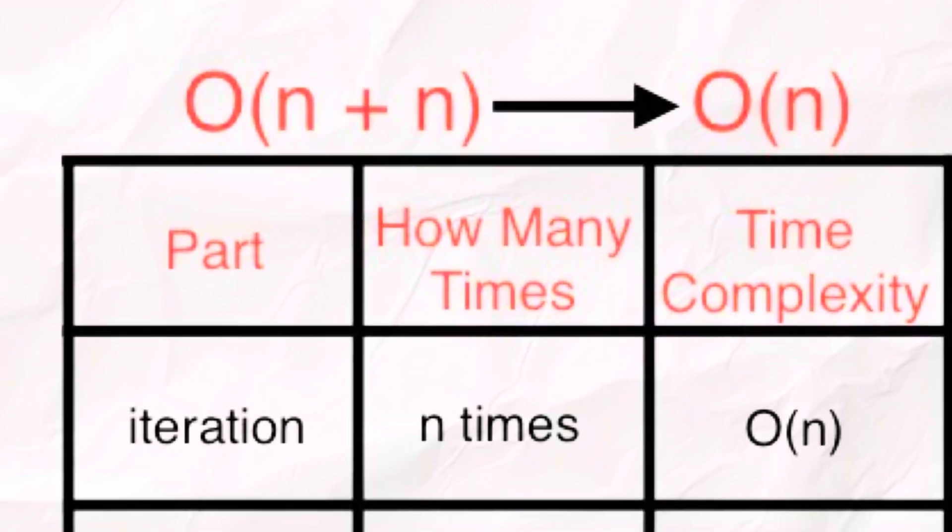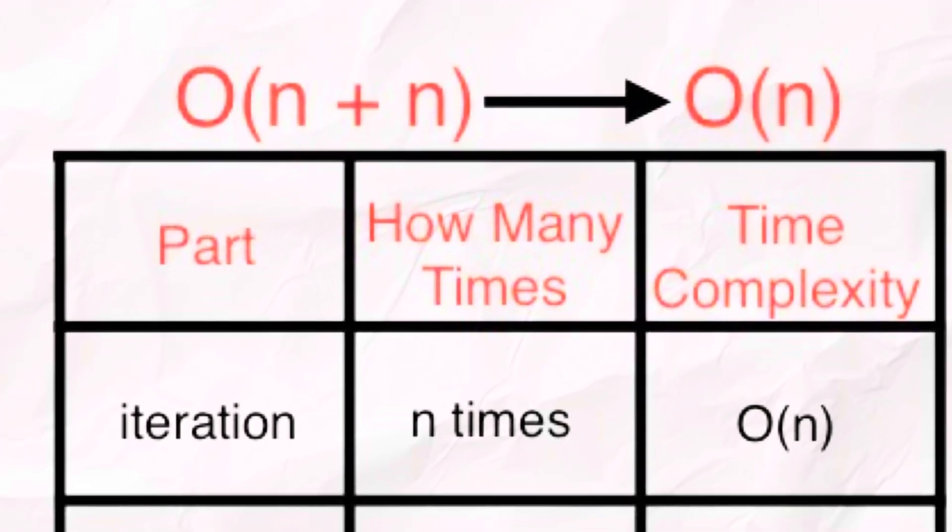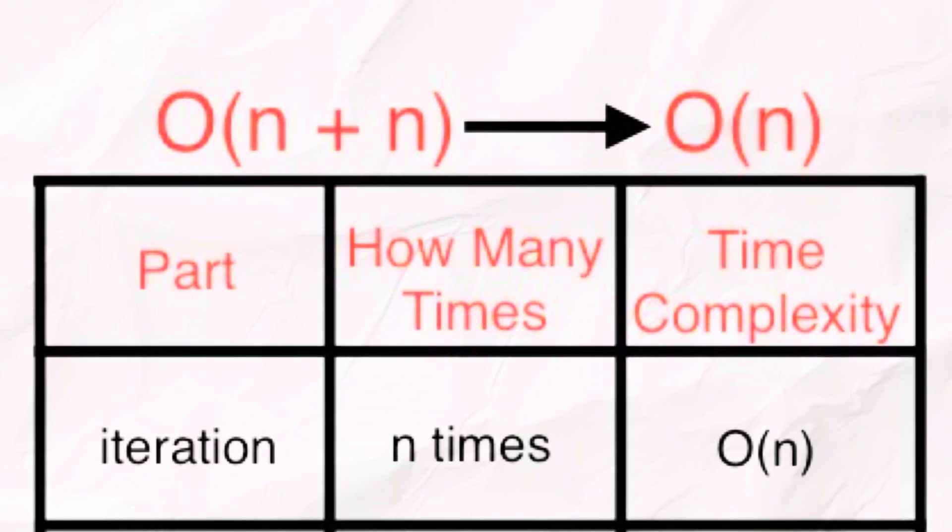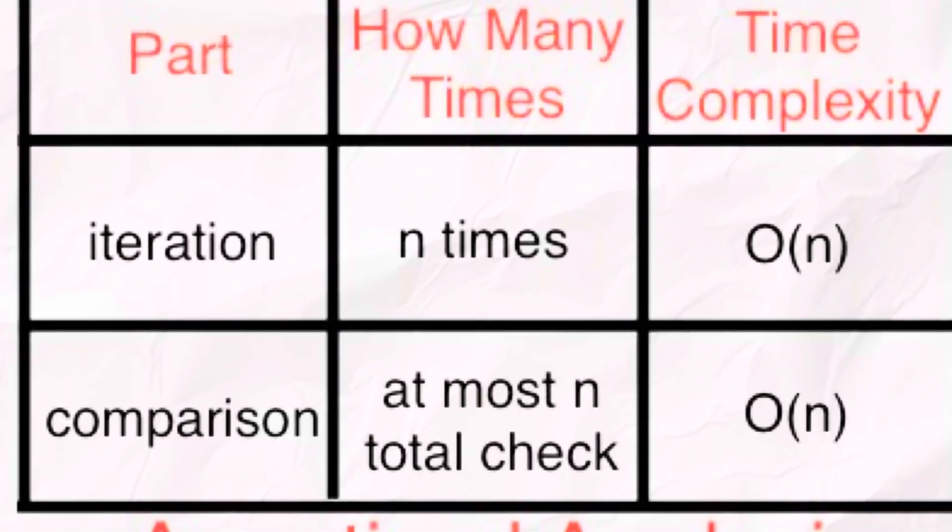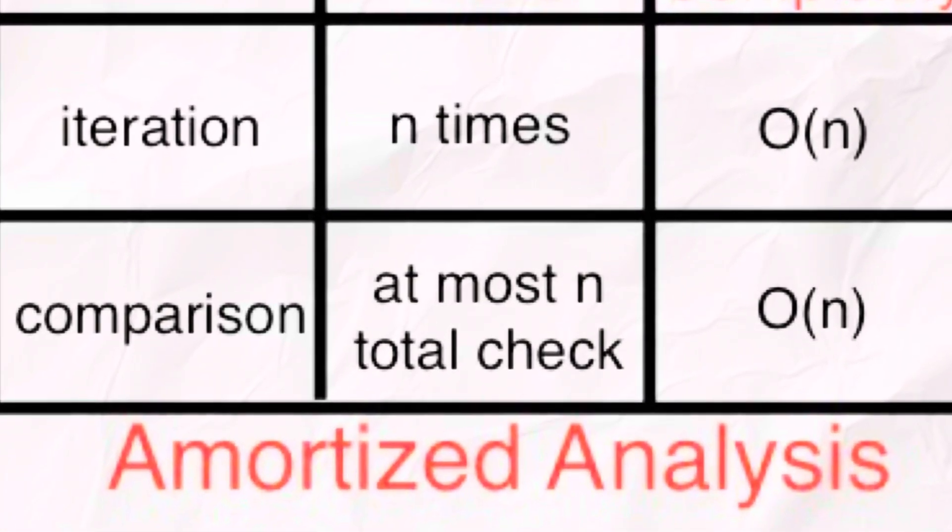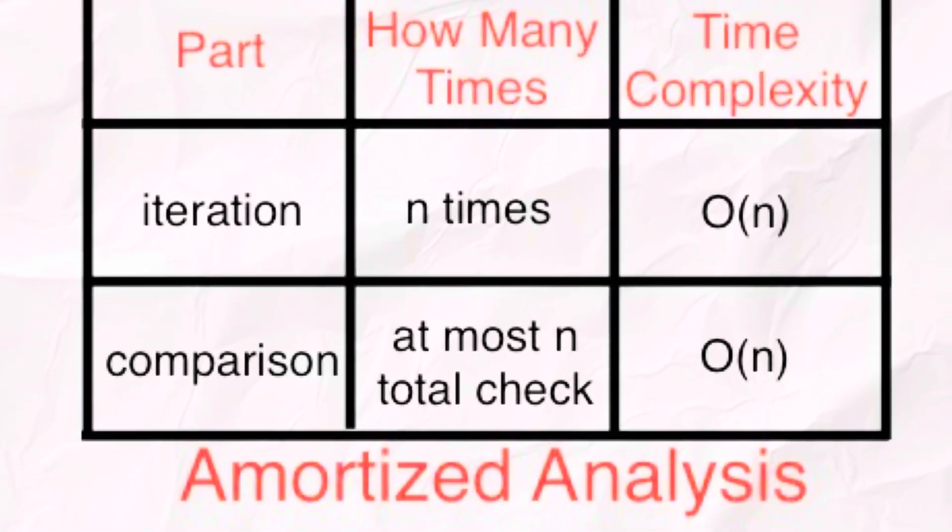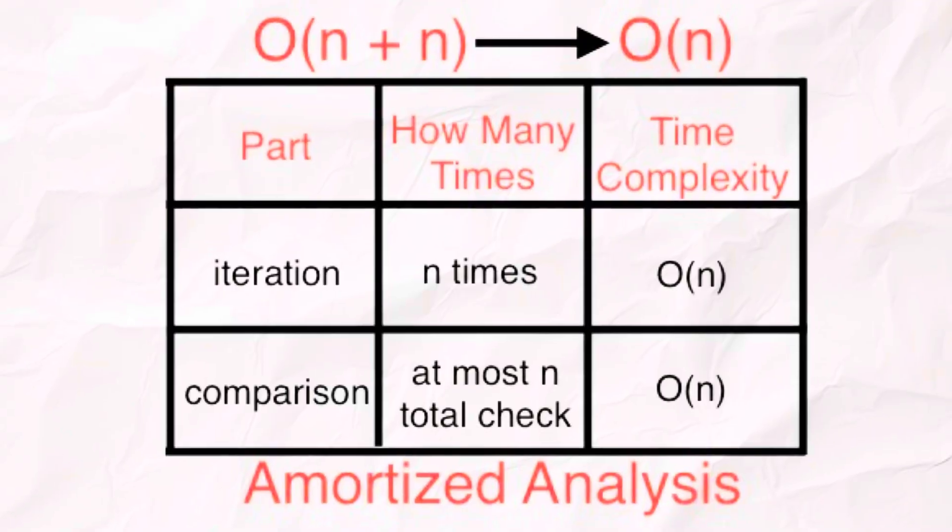Since r goes from 0 to n at most once, the total number of comparisons is bounded by O(n). That's amortized analysis. Individual steps might look costly, but over the whole process, the total cost is linear.